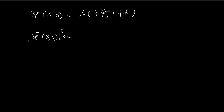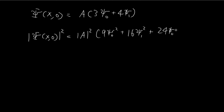So if we take the modulus and then square the wave function, on the right-hand side this will become the modulus of A squared, and here we have 9 times xi 0 squared plus 16 xi 1 squared plus 24 xi 0 xi 1. Since these functions have no imaginary components, we can omit the conjugate sign directly.